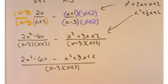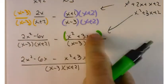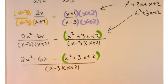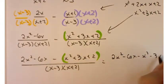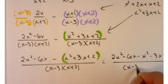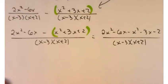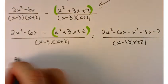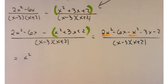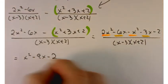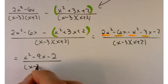The tricky part: you're subtracting the entire second numerator. This would be wrong: 2x squared minus 6x minus x squared plus 3x plus 2 — because you have to distribute the negative sign to all of those terms, not just the first one. The correct version is 2x squared minus 6x minus x squared minus 3x minus 2 over x minus 3 times x plus 2. Combining like terms: 2x squared minus x squared is x squared; minus 6x minus 3x is minus 9x; and minus 2. Final answer: x squared minus 9x minus 2 over x minus 3 times x plus 2.